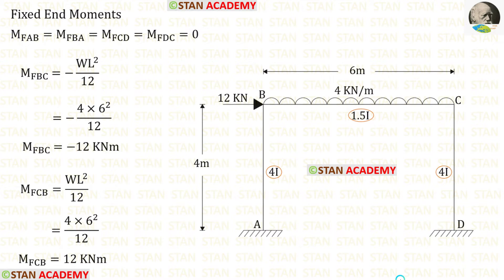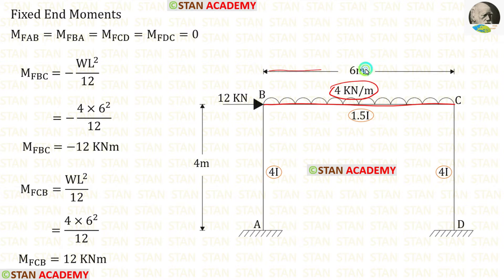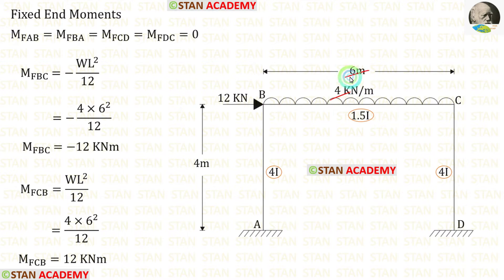Now let us find the fixed end moments. In columns AB and CD there are no loads, so fixed end moments M_AB and M_DC are 0. In beam BC we have a uniformly distributed load of 4 kN/m acting for the full span. The formulas for fixed end moments are minus wL²/12 and plus wL²/12, where w = 4 and L = 6. After calculation, M_BC = −12 and M_CB = +12.